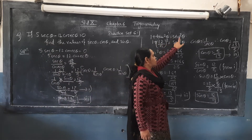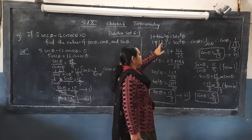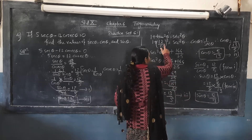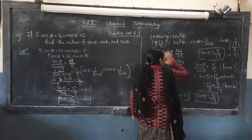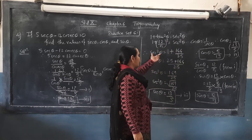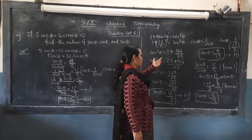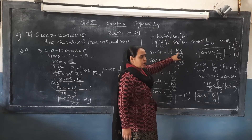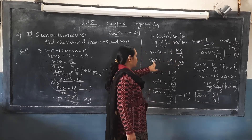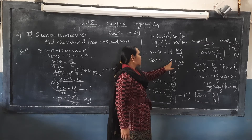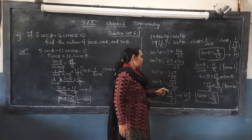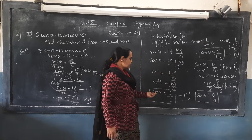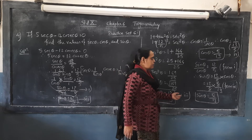Using the identity: 1 plus tan²θ equals sec²θ. We substitute tan θ equals 12/5, so 1 plus (12/5)² equals sec²θ. sec²θ equals 1 plus 144 upon 25. Cross multiplying gives 25 plus 144 upon 25, so sec²θ equals 169 upon 25, and therefore sec θ equals 13 upon 5. This is statement 3.